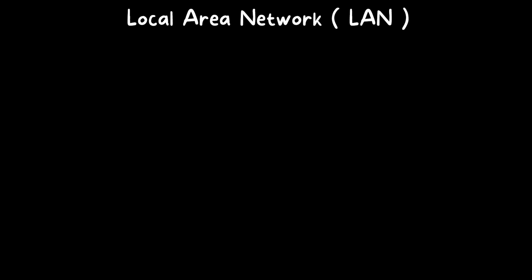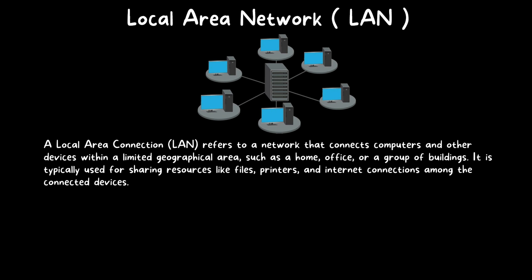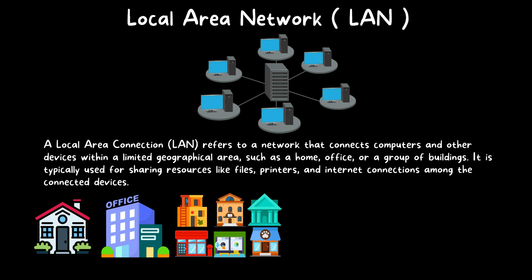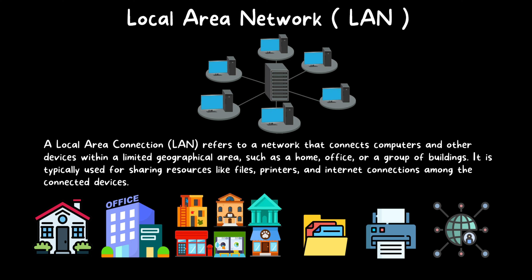What is a Local Area Network or LAN? A Local Area Network refers to a network that connects computers and other devices within a limited geographical area, such as a home, office, or a group of buildings. It is typically used for sharing resources like files, printers, and internet connections among connected devices. It is called local area network because it exists in a limited geographical area.